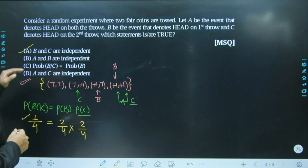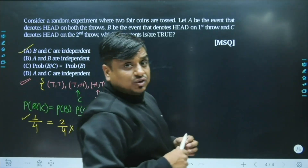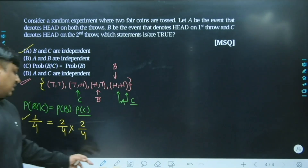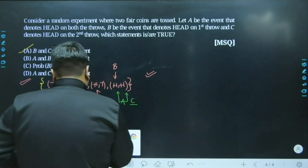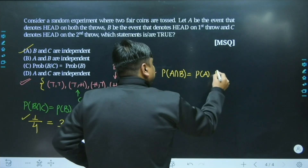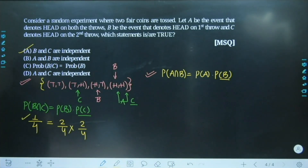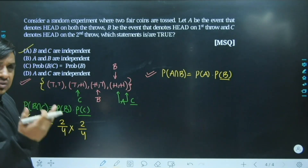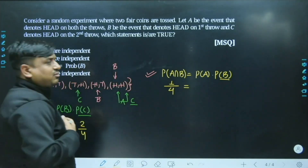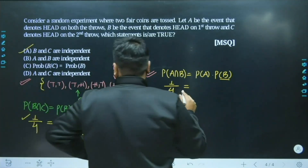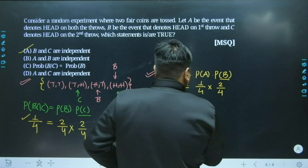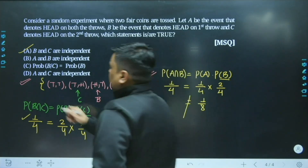Next, checking if A and B are independent: P(A ∩ B) must equal P(A) × P(B). Event A ∩ B = {HH}, so P(A ∩ B) = 1/4. P(A) = 1/4 and P(B) = 2/4 = 1/2. So P(A) × P(B) = 1/4 × 1/2 = 1/8. The left-hand side (1/4) does not equal the right-hand side (1/8), so A and B are not independent. Option B is discarded.